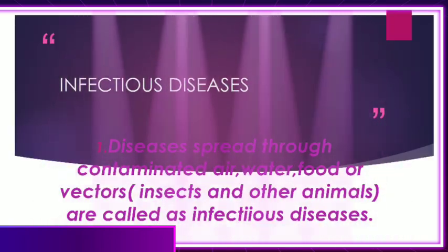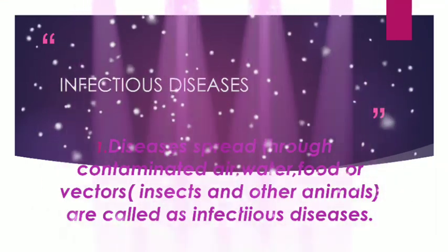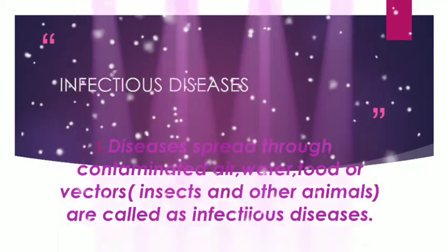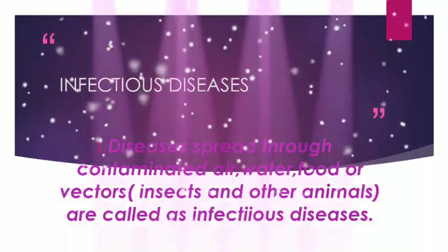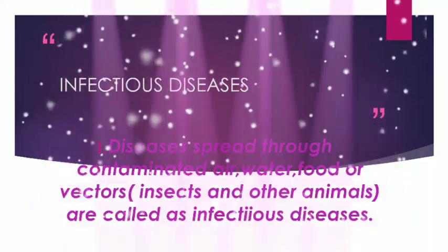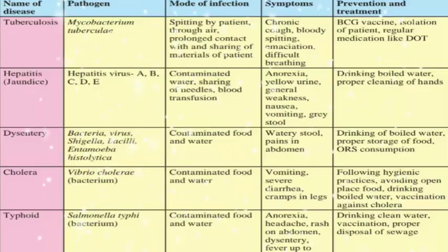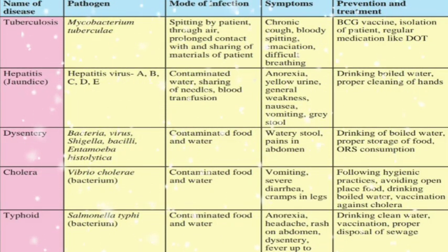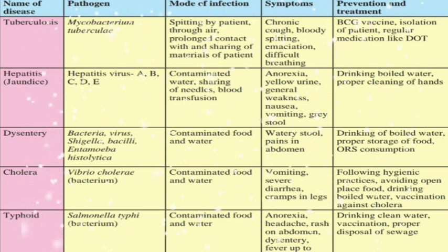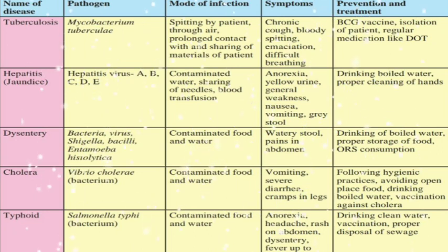Diseases spread through contaminated air, water, food, or vectors — that is, insects and other animals — are called infectious diseases. See this chart: it lists the name of disease, pathogen, mode of infection, symptoms, and preventive measures and treatments.